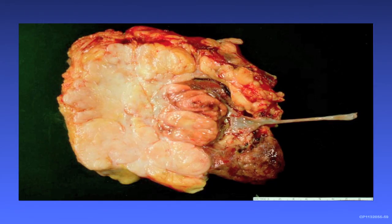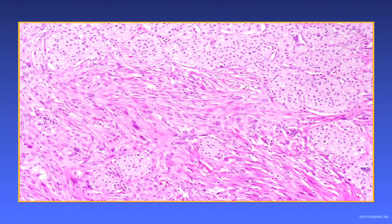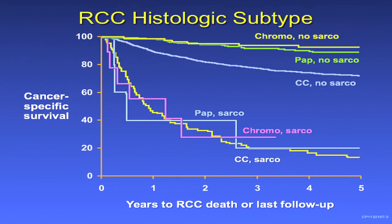Finally, on sarcomatoid renal cell carcinoma: here's a large sarcomatoid mass, actually composed of bone, and here's a chromophobe with a spindle cell component. It is essential that pathologists recognize this because of its impact on outcome. Grade 4 with sarcomatoid differentiation does significantly worse than grade 4 without. And once sarcomatoid differentiation occurs, it doesn't matter what the underlying subtype is — the outcome is very aggressive. Thank you.